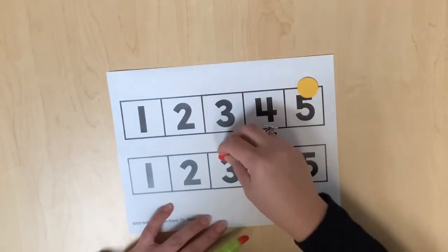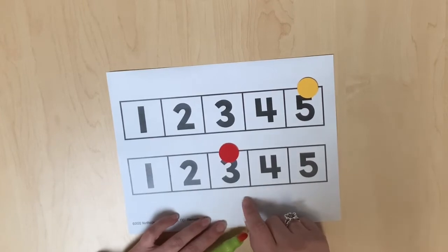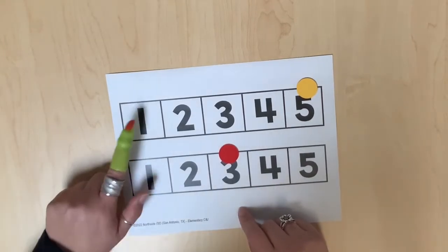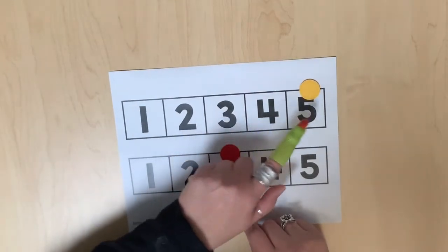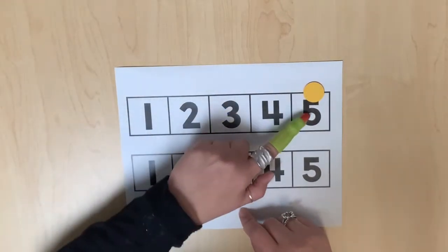Five, three. Five is more than three because more spaces were counted on the number path. One, two, three, four, five. One, two, three. Five is greater than three.